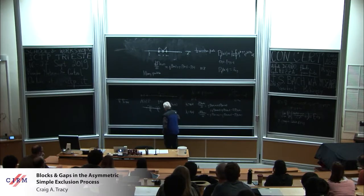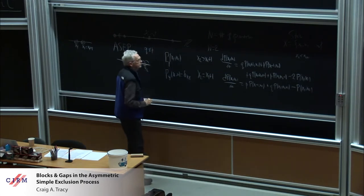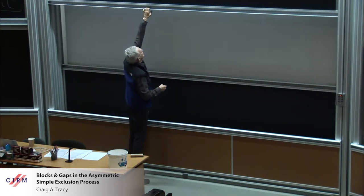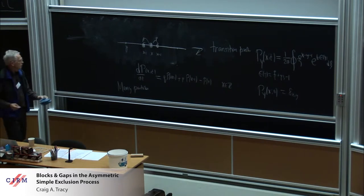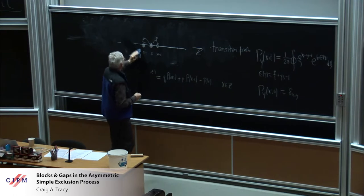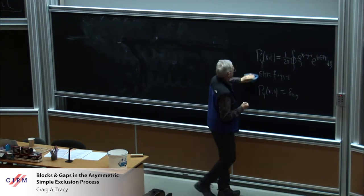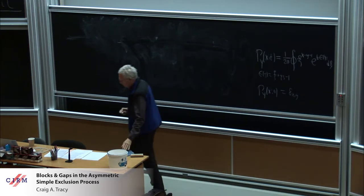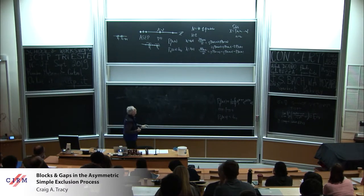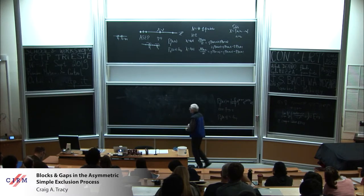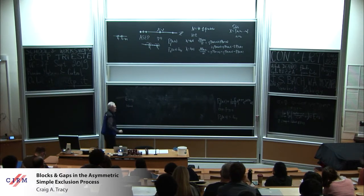I'm going to call that first equation the easy equation. I'm going to call the second one the hard equation. If the easy equation held for all x1, x2, then we'd just use Fourier series to solve that problem. They'd be just independent particles. So what we're going to do is we want to get rid of the hard equation.